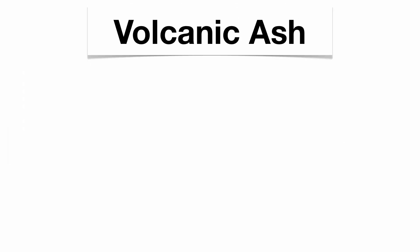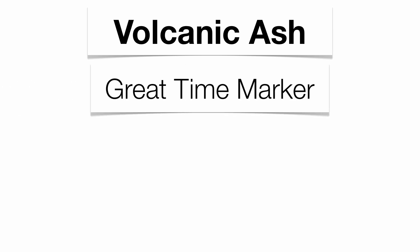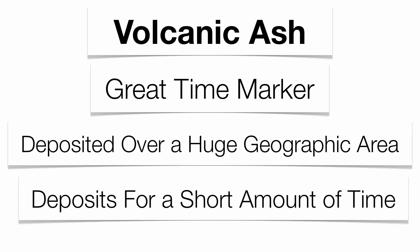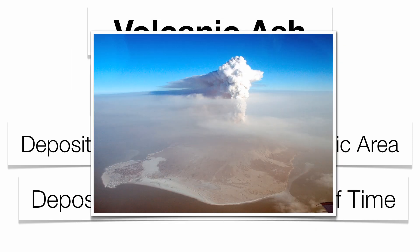Volcanic ash is also a very good time marker, simply because it's distributed over a very large geographic area and deposits for a relatively short period of time. So both volcanic ash and index fossils are very good time markers.